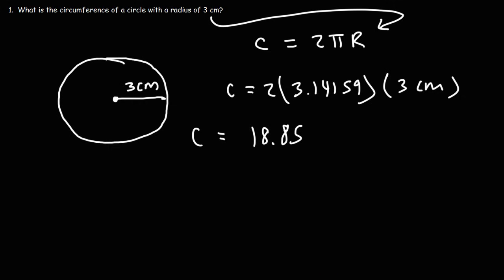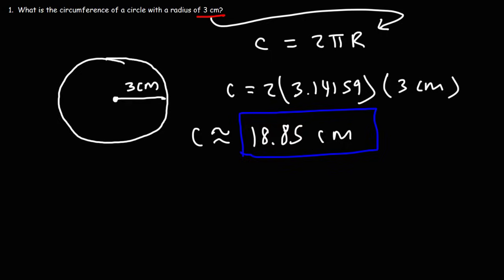Now, what are the units of circumference? The units for the circumference of a circle will be the same as the unit of the radius of the circle. In this case, it's going to be centimeters. So the circumference of this particular circle is approximately 18.85 centimeters — I should use the approximate symbol since this is a rounded answer.